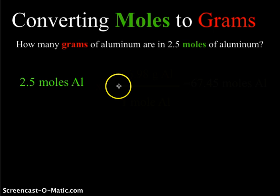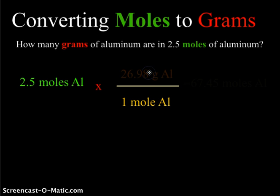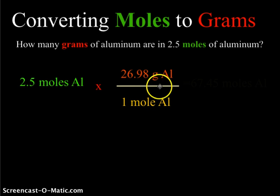We are going to multiply by a conversion factor, but this time the mole will be in the denominator because we are trying to cancel the unit mole. We're going to use the mass from the periodic table — 26.98 grams of aluminum — in the numerator. This will give us an answer in grams after moles cancels.